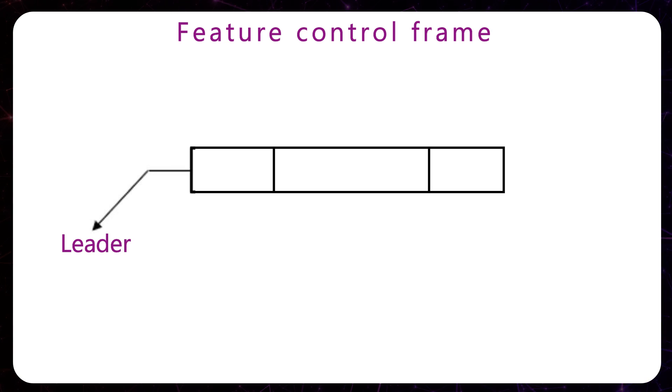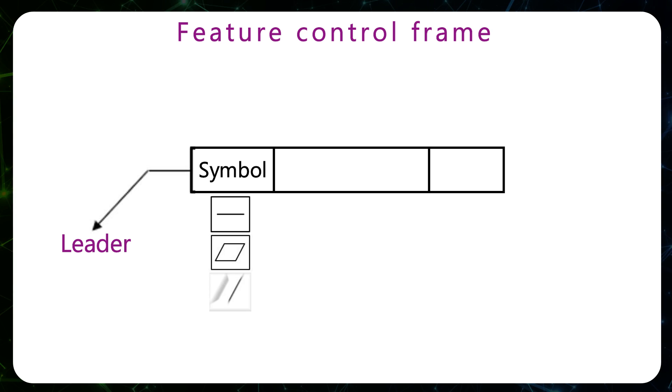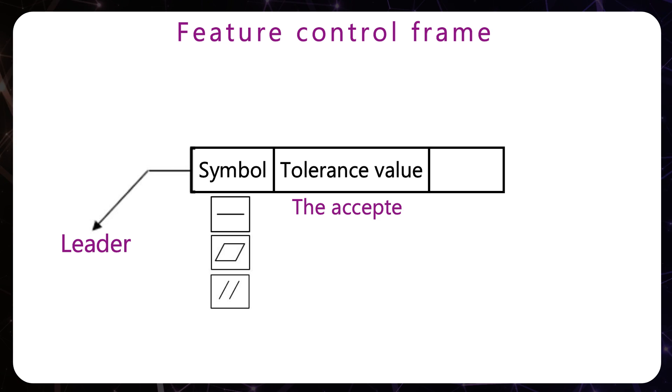In the first field, we put the symbol of the specification like straightness, flatness or parallelism. In the second field, we put the value of tolerance. This is the accepted deviation that we want to allow or tolerate.